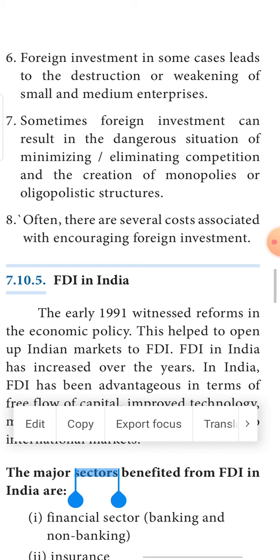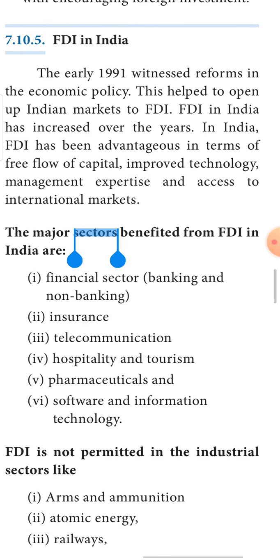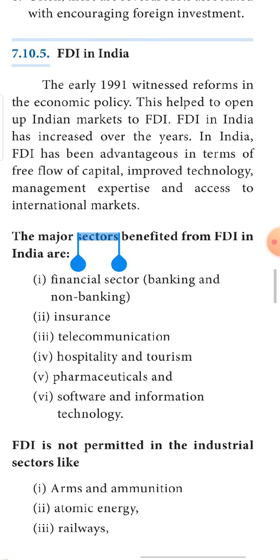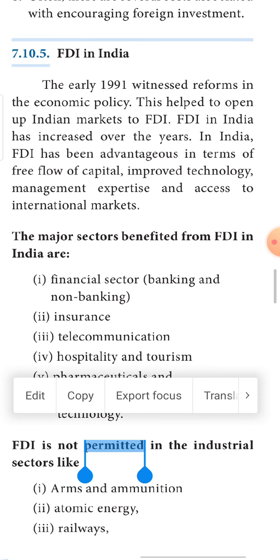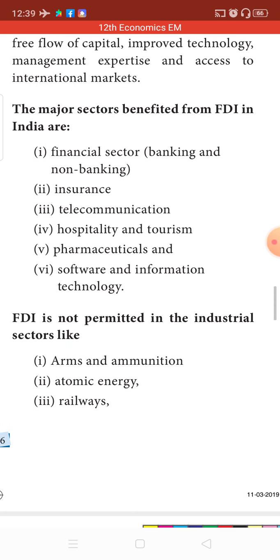There are also hidden causes which discourage FDI. In India, FDI was witnessed from 1991, when the New Industrial Policy — LPG: Liberalization, Privatization, Globalization — was launched. After that, FDI came into India. We could see FDI in capital flow, improved technology, management expertise, and accessing international markets.